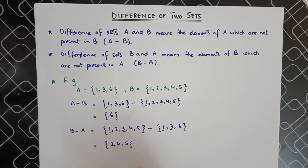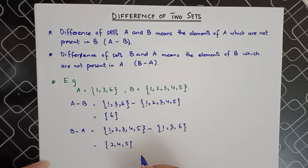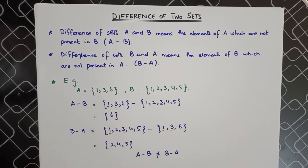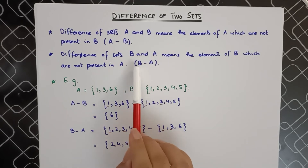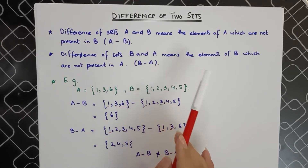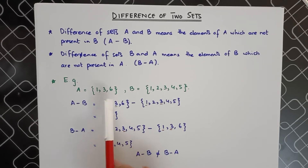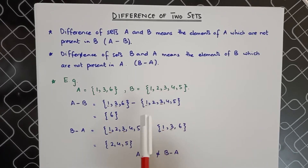Always remember that when we perform A minus B and B minus A, they are not equal. As you can see from the answers, A minus B is not equal to B minus A. So if you are asked to find A minus B and you perform B minus A instead, the answer will not be the same. We always write the remaining elements from the first set which are not present in the second set.